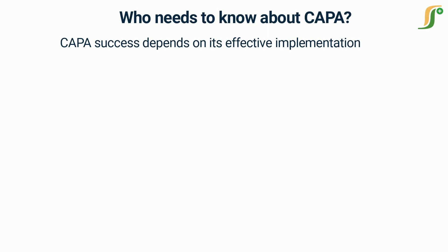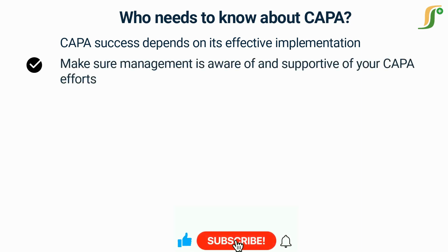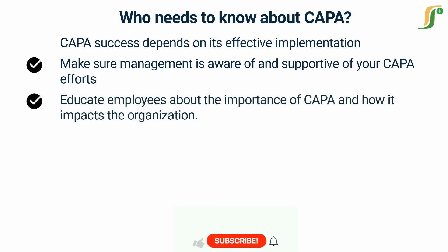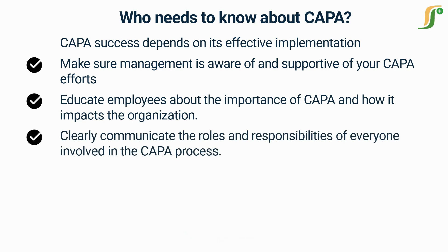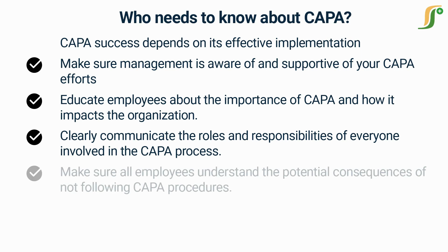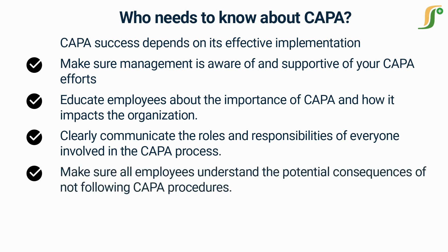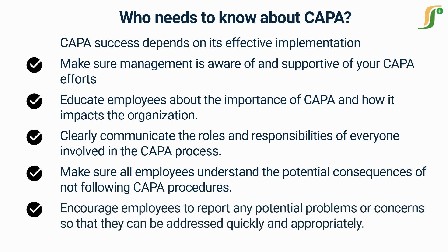CAPA is not just about the process — it is also about communication. Your CAPA success depends on getting support from all levels of the organization. Make sure management is aware of and supportive of your CAPA efforts. Educate employees about the importance of CAPA and how it impacts the organization. Clearly communicate the roles and responsibilities of everyone involved, and make sure all employees understand the potential consequences of not following CAPA procedures. Encourage employees to report any potential problems or concerns so that they can be addressed quickly and appropriately.